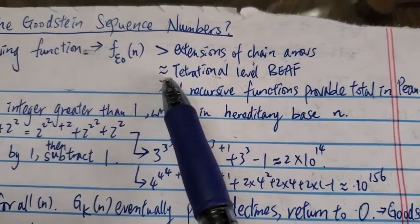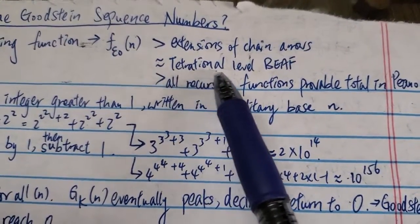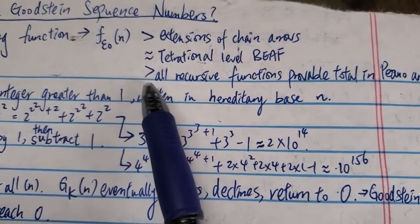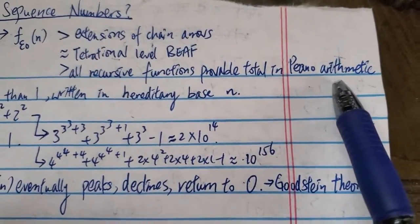And on the other hand, it grows around the same rate as the tetrational level of BEEF, and it grows faster than all recursive functions provable total in Peano arithmetic.